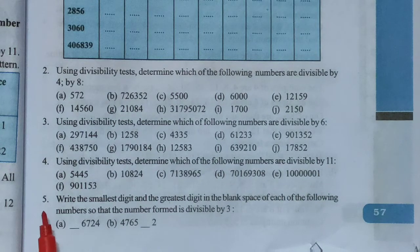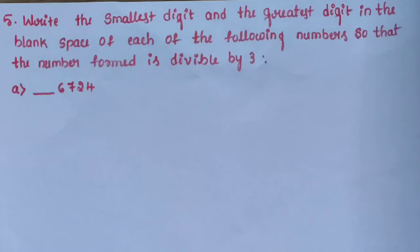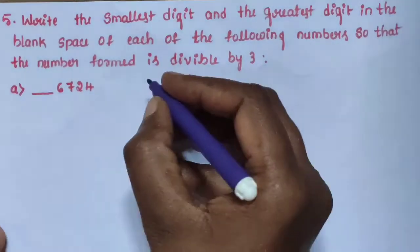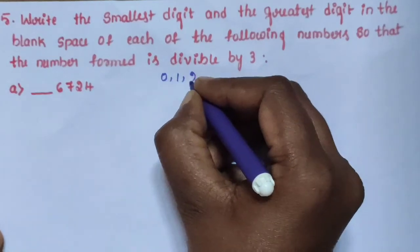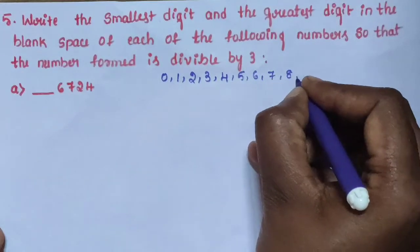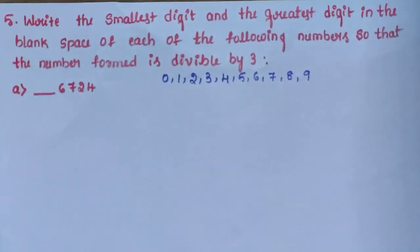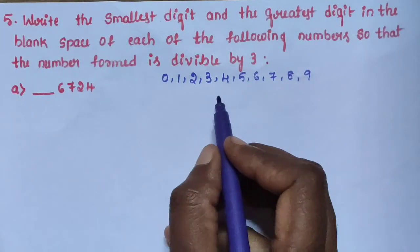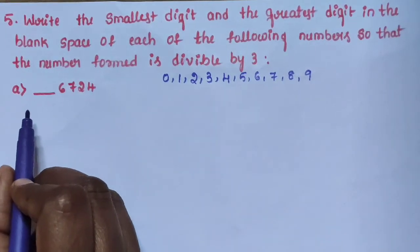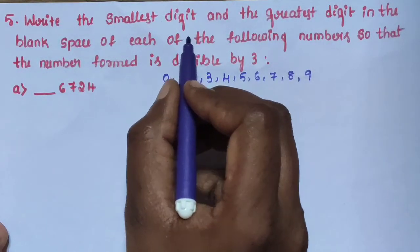Next, question number 5: write the smallest digit and the greatest digit in the blank space of each of the following numbers so that the number formed is divisible by 3. Single digit numbers are 0 through 9, where 0 is the smallest and 9 is the greatest single digit number. We need to find which digit in the blank makes the number divisible by 3.